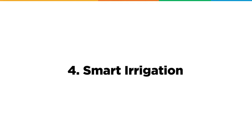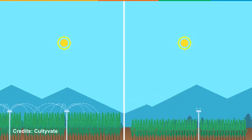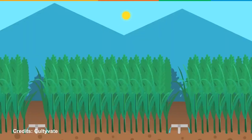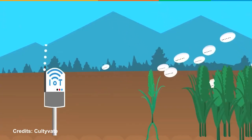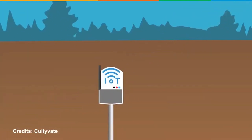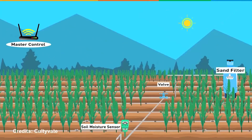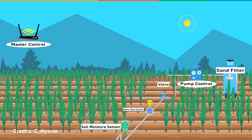At number 4, we have Smart Irrigation. With climate change and recurrent water crises, farmers suffer a great deal with growing crops. Smart Irrigation puts an end to this ordeal. This system comes with a moisture sensor that checks the soil for its water content. When the soil moisture drops below a certain value, the system triggers the water supply.